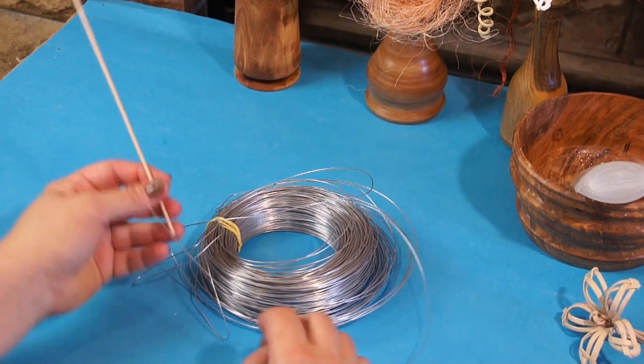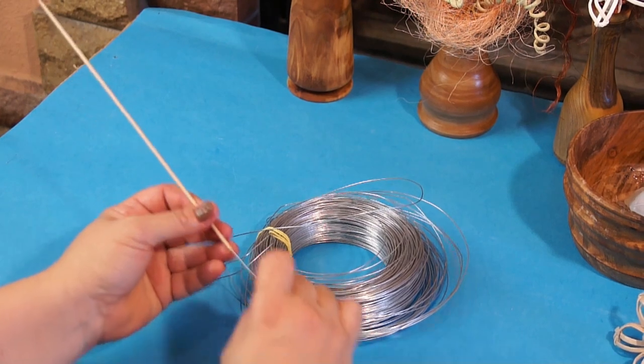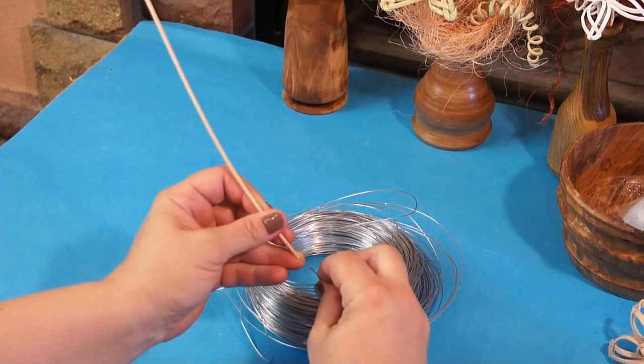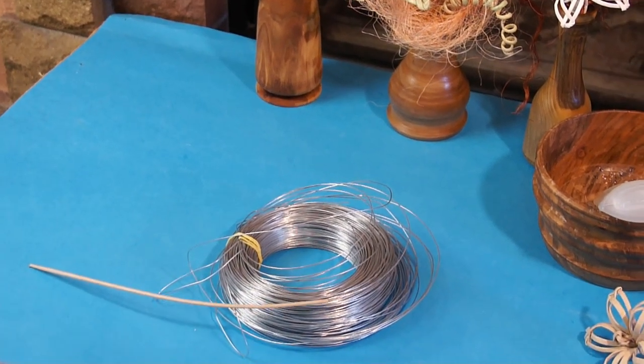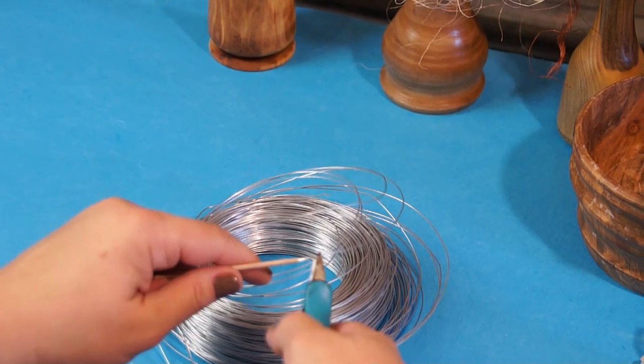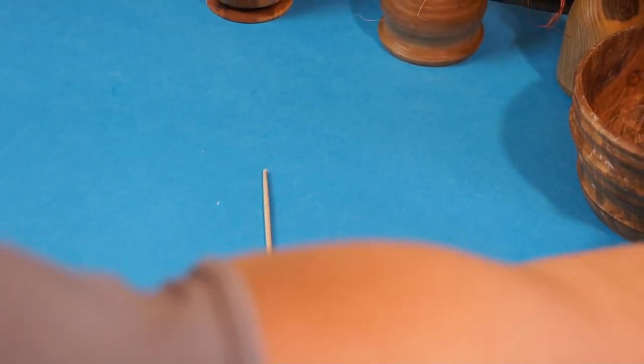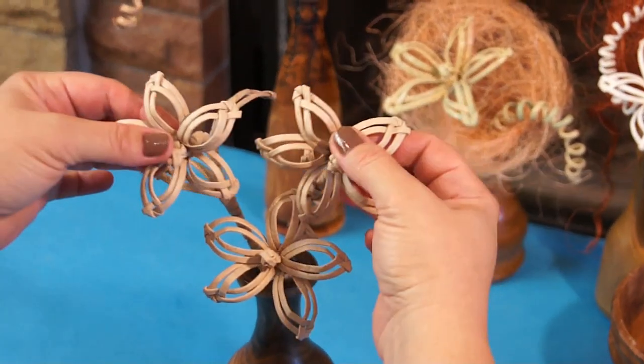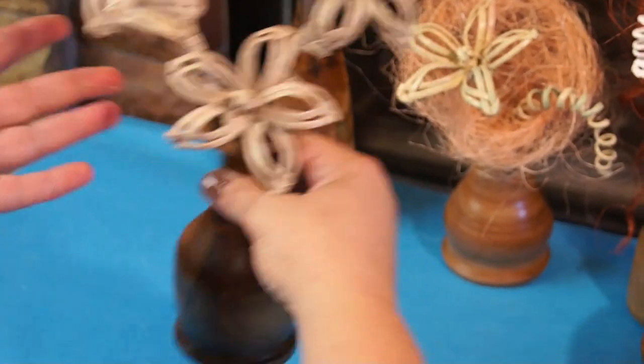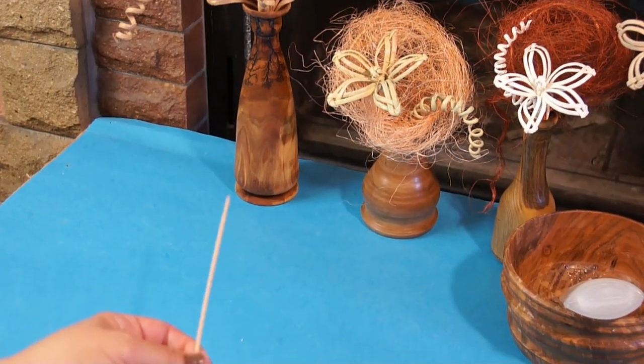Now let's prepare a stem. I take a wire. 0.9 mm thickness is quite enough. Insert it into the tube. This way it will be easier to shape the bouquet with the flowers directed where they are supposed to be.